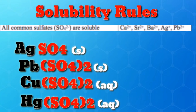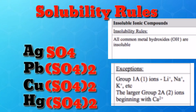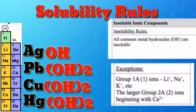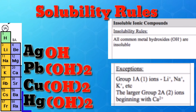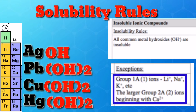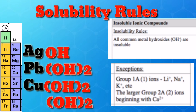Rule 9: Insolubility rules — most hydroxide salts are only slightly soluble. Hydroxide salts of Group 1 elements are soluble; hydroxide salts of Group 2 elements are slightly soluble; hydroxide salts of transition metals and aluminum are insoluble. Examples: silver hydroxide, lead hydroxide, copper hydroxide, and mercury hydroxide. Based on the rule, all hydroxides are insoluble except those with Group 1A and Group 2A elements.